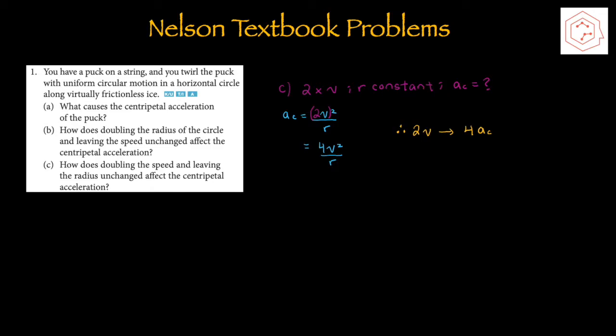Part C asks how doubling the speed while leaving the radius unchanged affects the centripetal acceleration. Using the same equation ac = v² / r, but plugging in 2v, since the v term is squared, the whole term is squared. So (2v)² / r = 4v² / r. Therefore, doubling the speed while leaving the radius unchanged means the centripetal acceleration would be quadrupled.